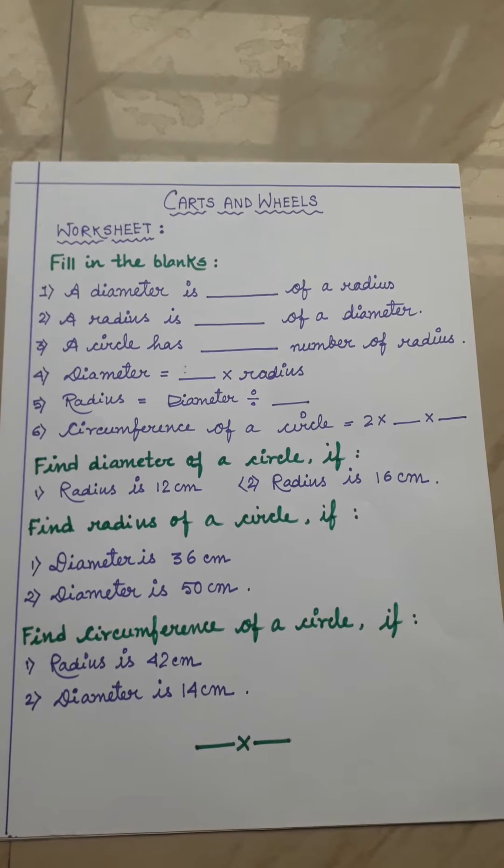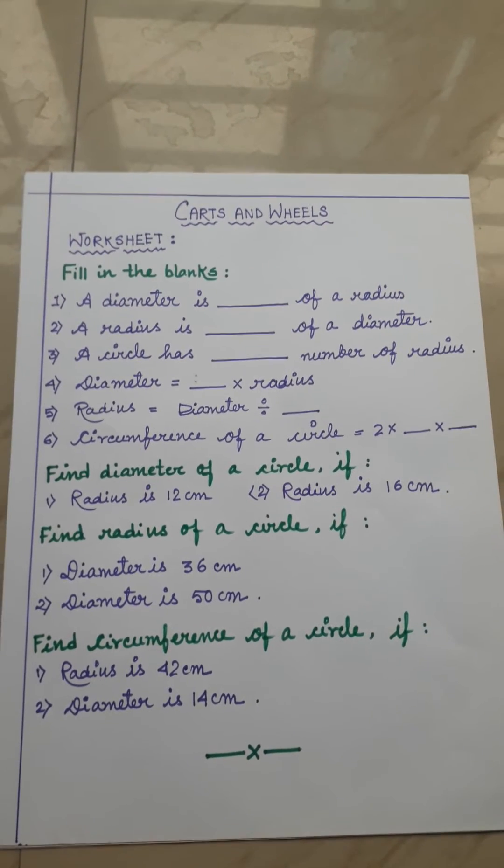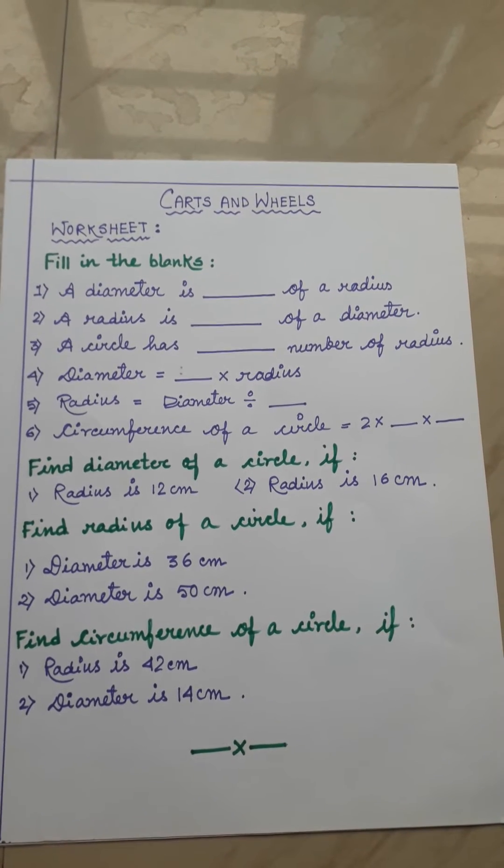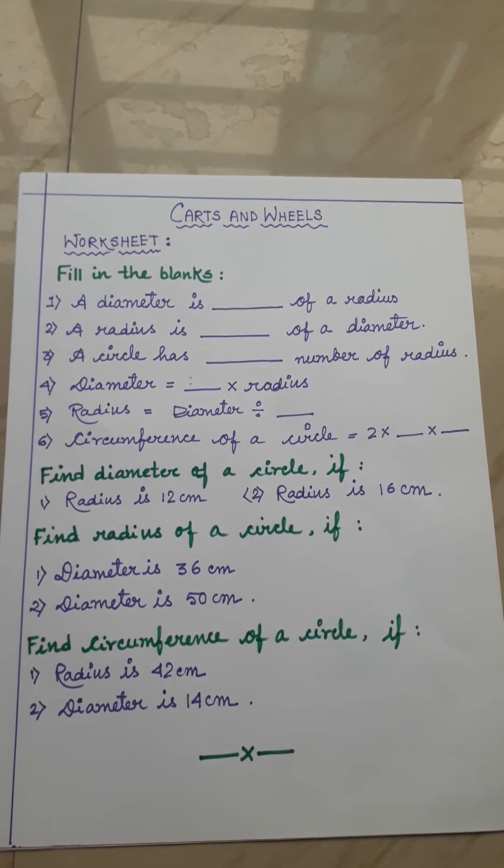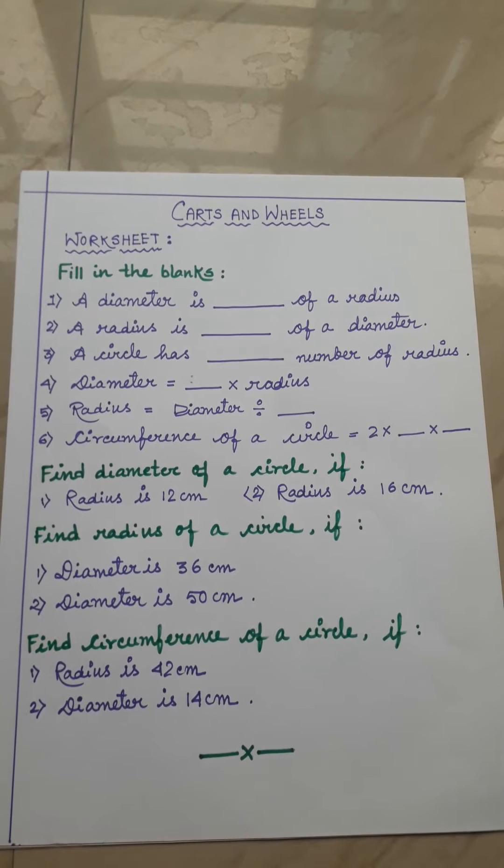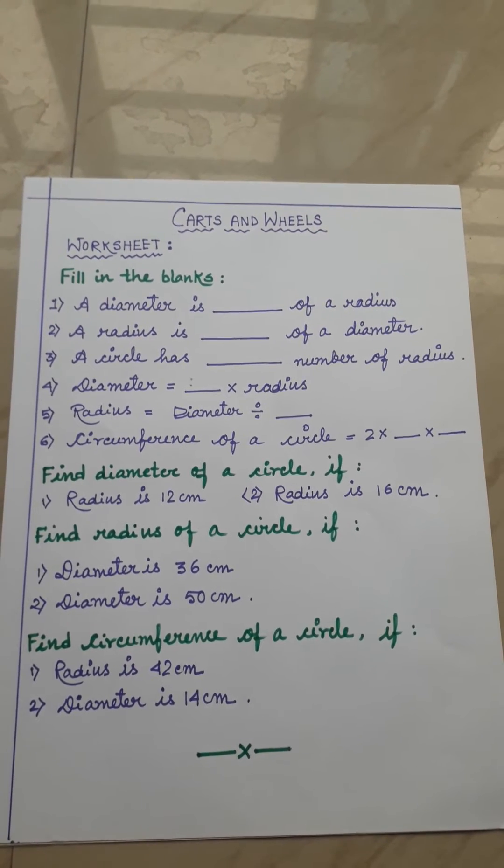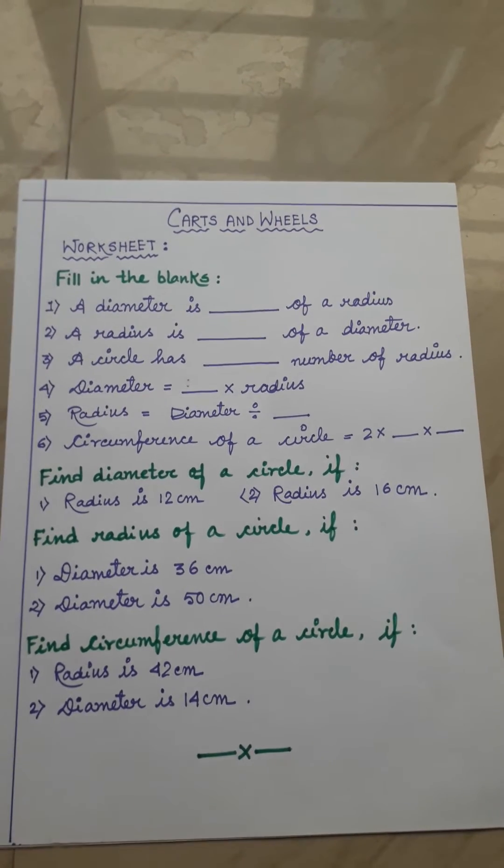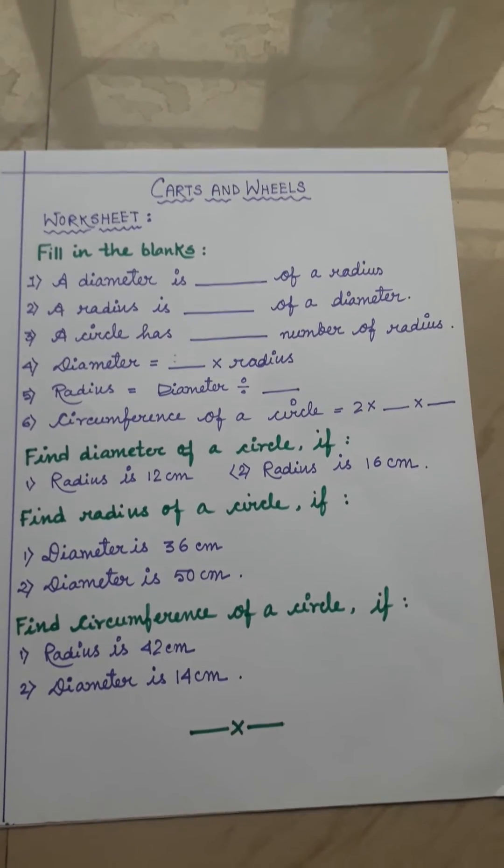First one: a diameter is ___ of a radius. Second one: a radius is ___ of a diameter. Third one: a circle has ___ number of radii. Fourth one: diameter equals ___ into radius. And fifth number: radius equals diameter divided by ___. And sixth number: circumference of a circle equals 2 into ___ into ___.